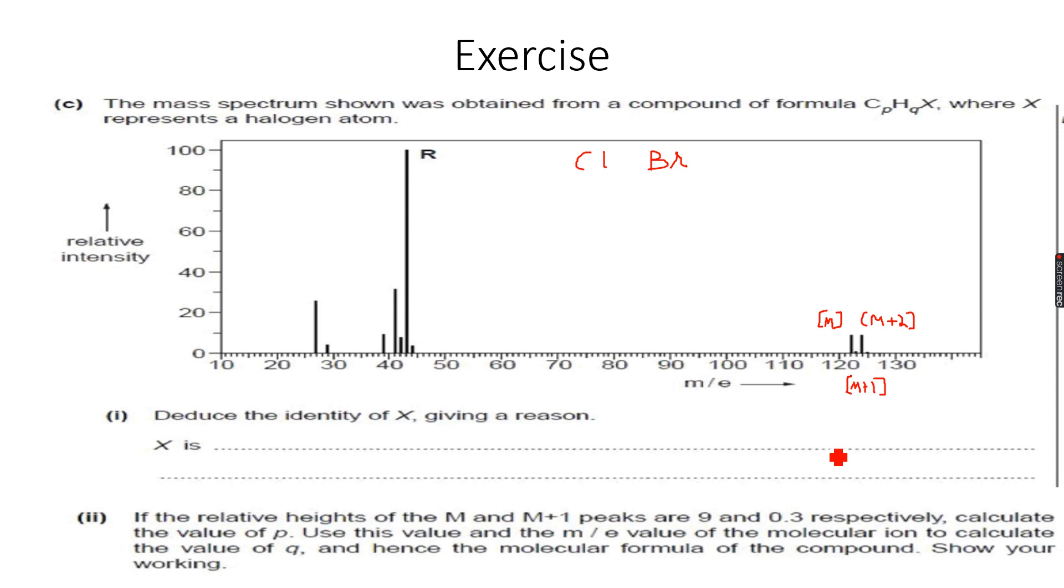As you can see, the ratios of the heights of the M+2 and M peak tell us about the halogen. In this case, the two peaks are of equal height, which means that X is bromine because we know that both isotopes of bromine are present in equal abundance.